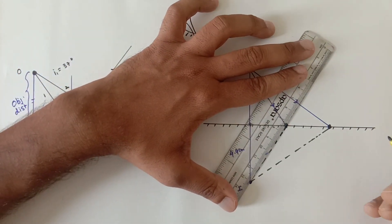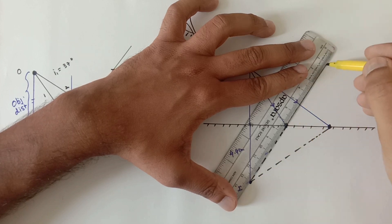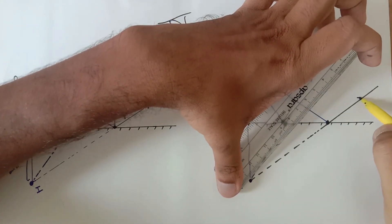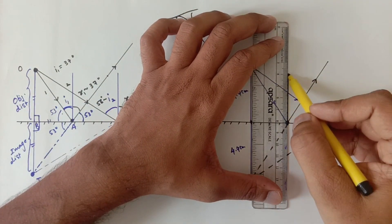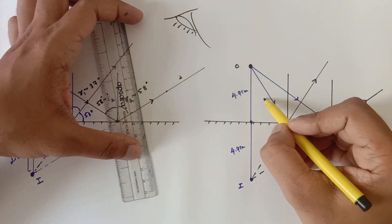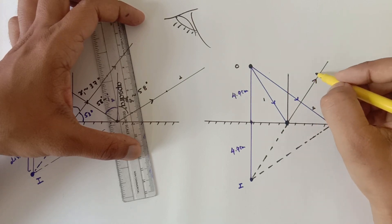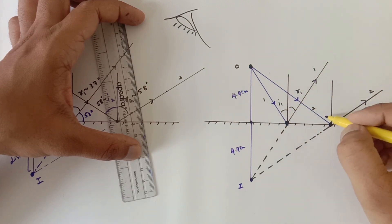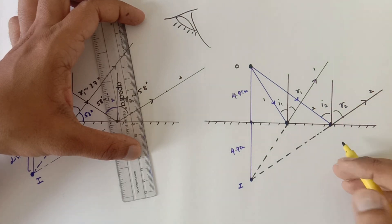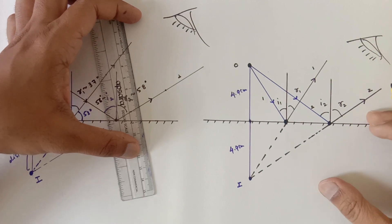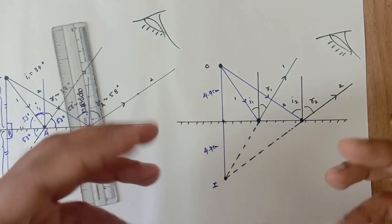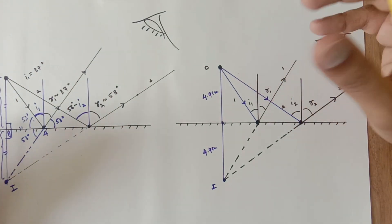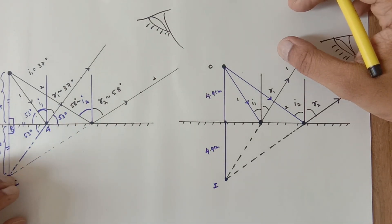Now join each point of incidence to the image with a dotted line, then extend each dotted line forward. The normal lies exactly in between — it is the angle bisector. This gives incident ray 1, incident ray 2, reflected ray 1, and reflected ray 2. Angles i1 = r1 and i2 = r2, satisfying the law of reflection perfectly. Nobody would know you didn't use a protractor! Please subscribe and share — thank you for watching.